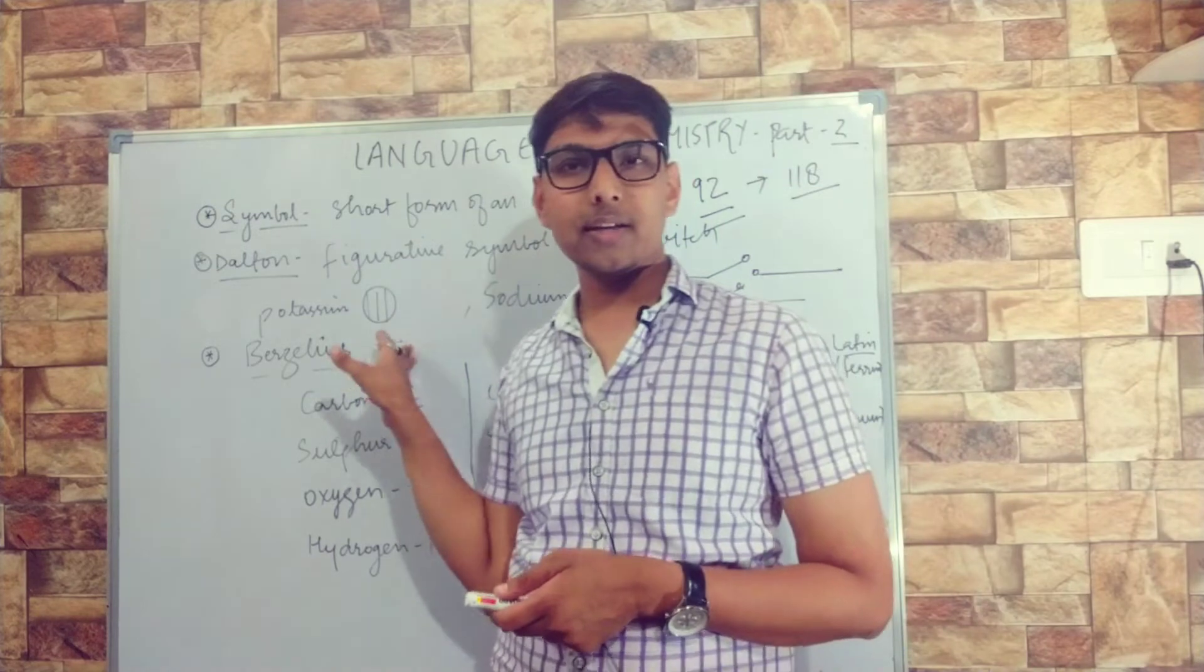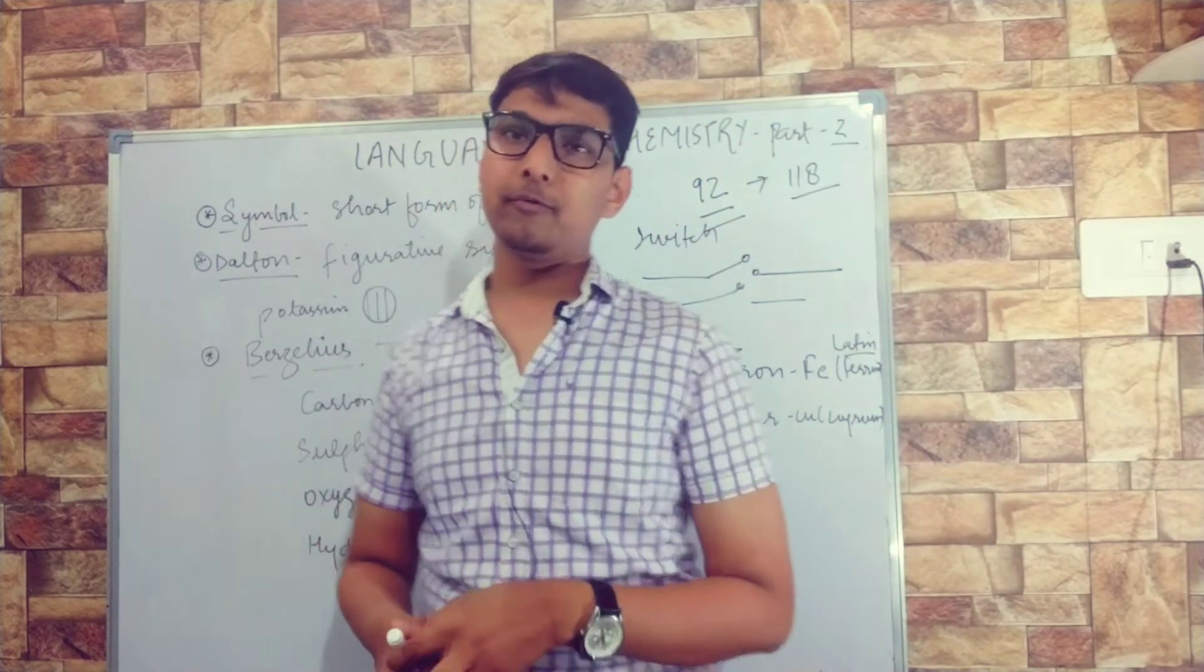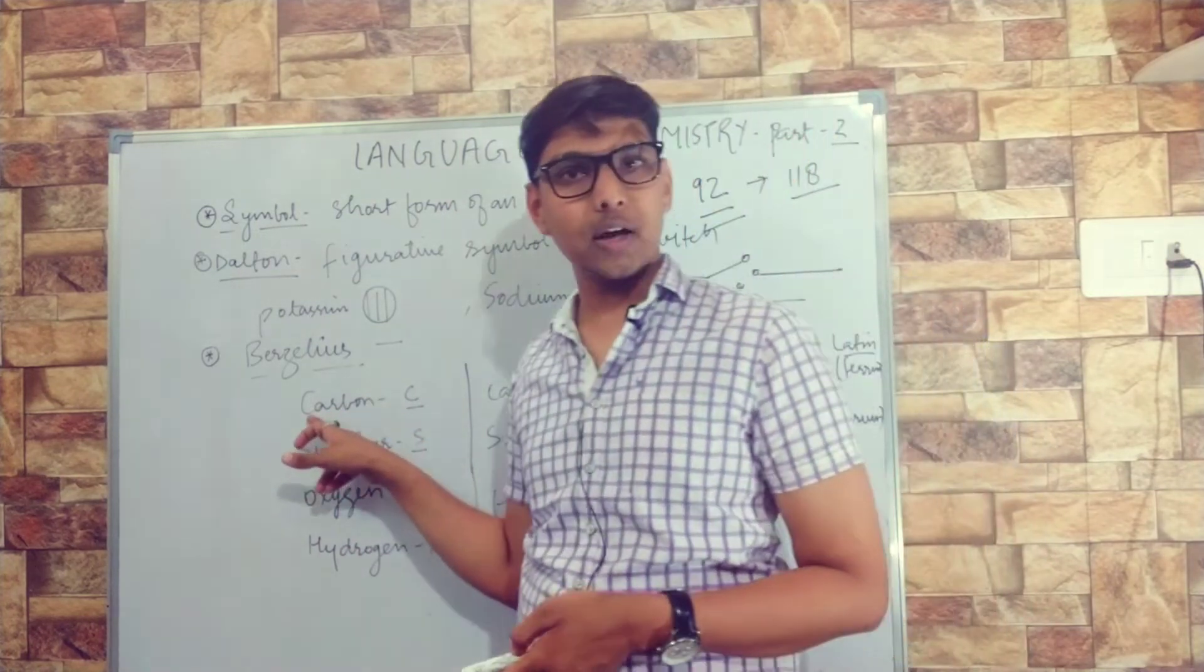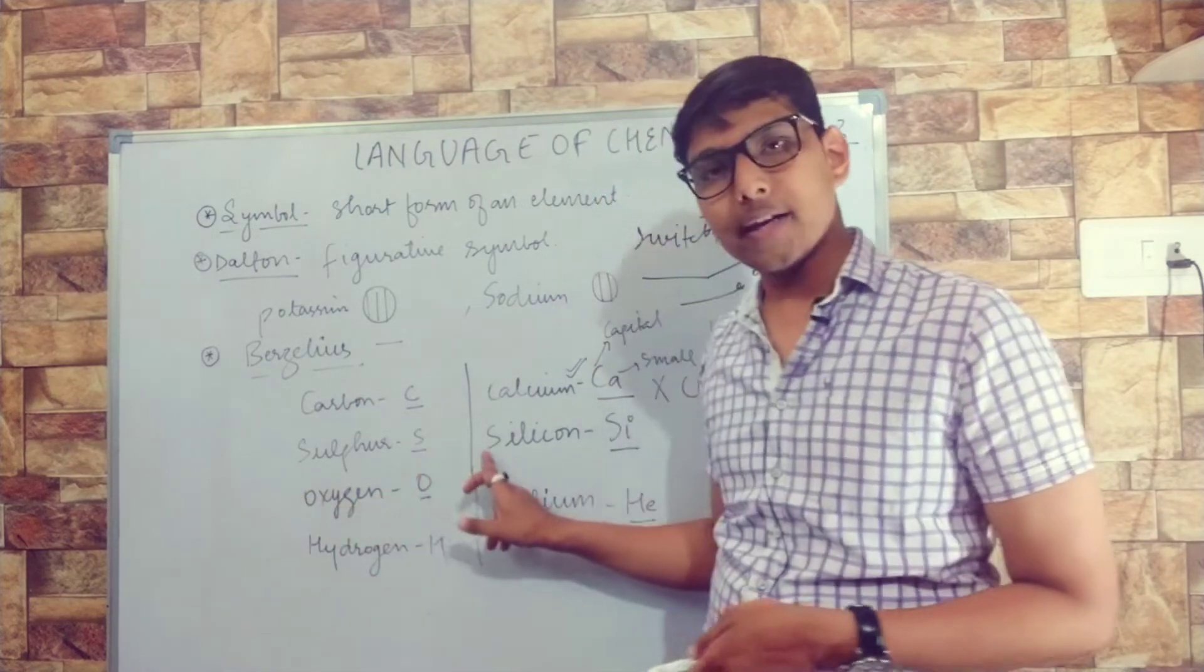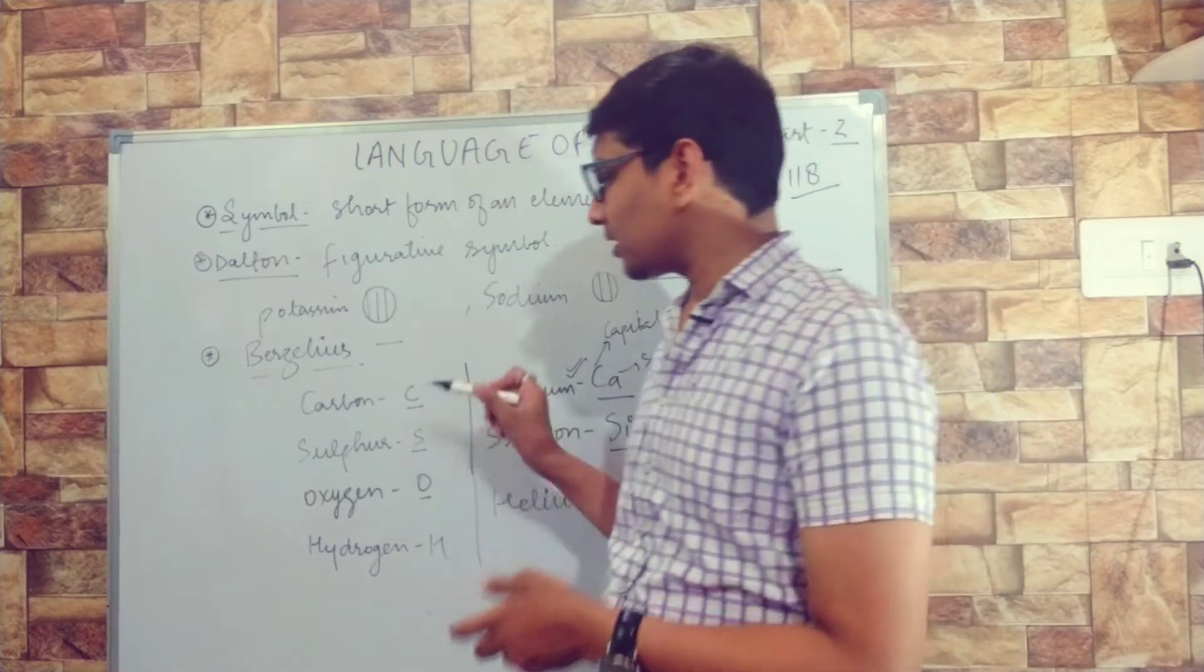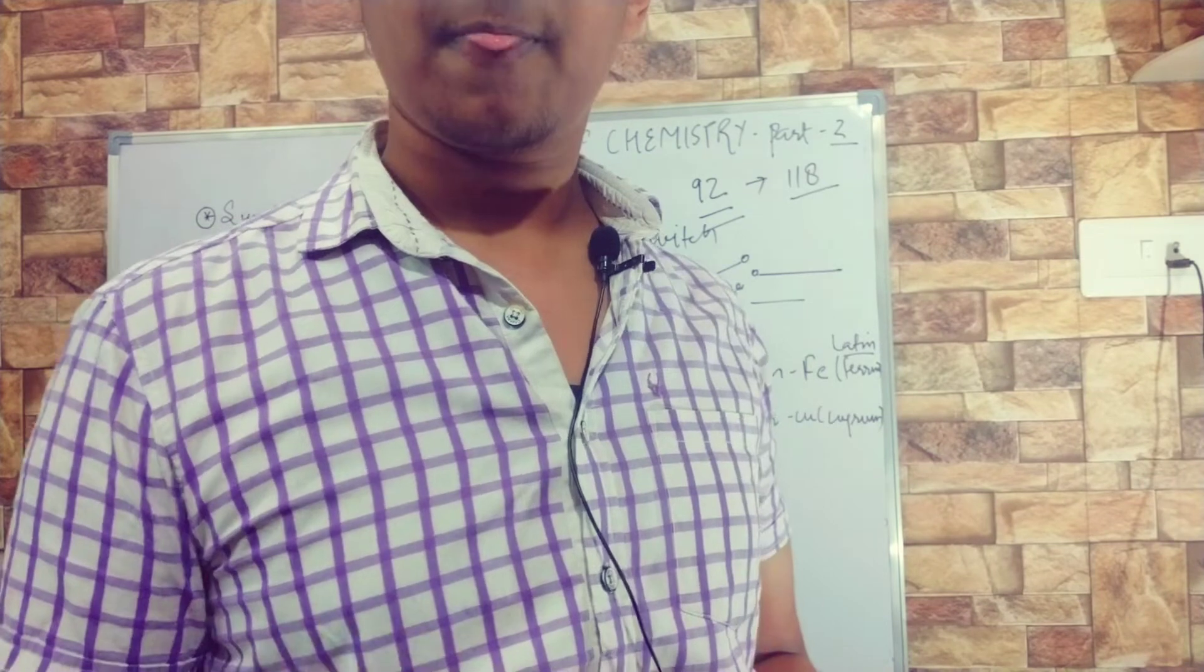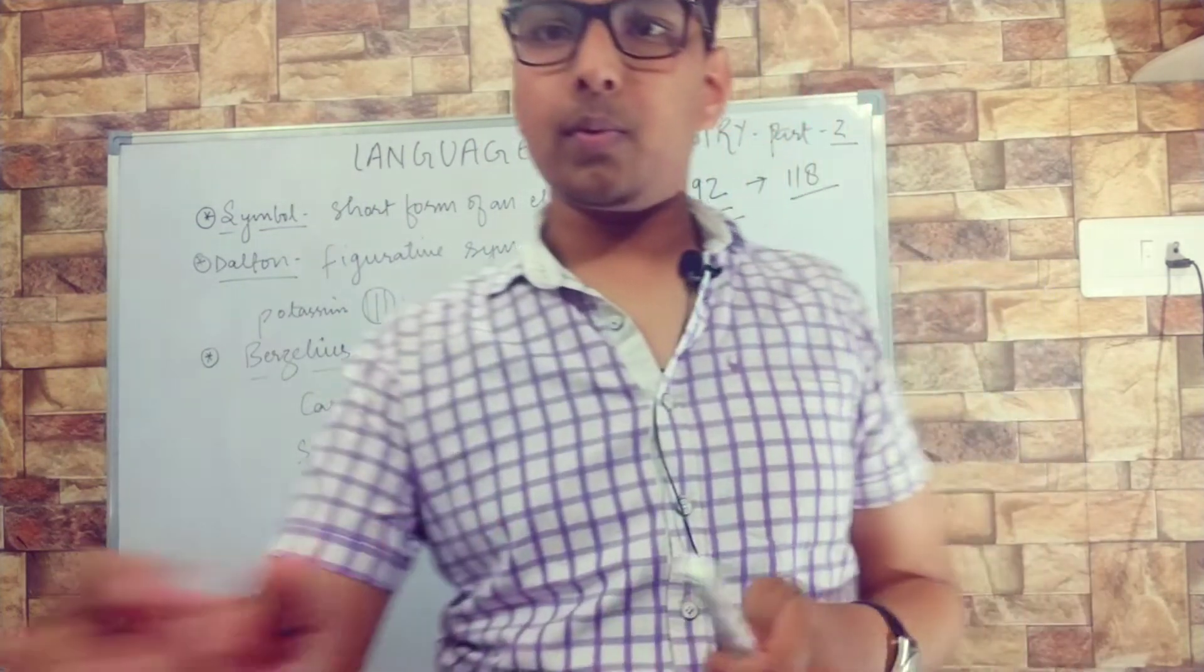Later, a scientist said that the first letter of the element will be written as a symbol. For example, we can see carbon - we write C, the first letter of carbon. The first letter will be written in capital: sulfur S, oxygen O, hydrogen H.